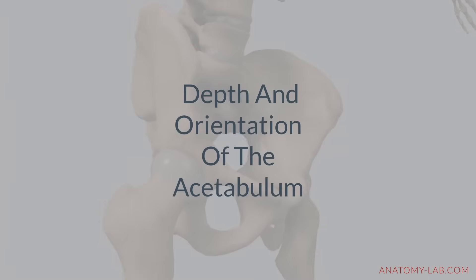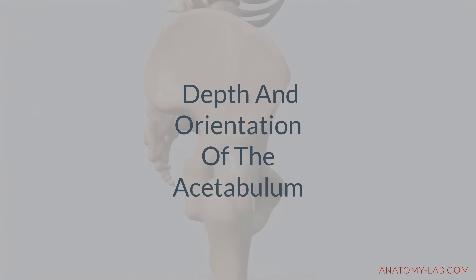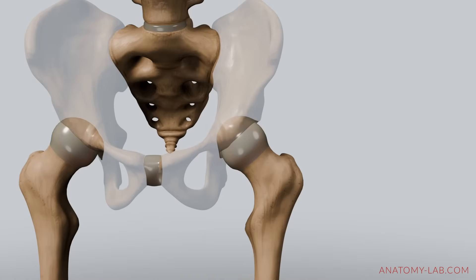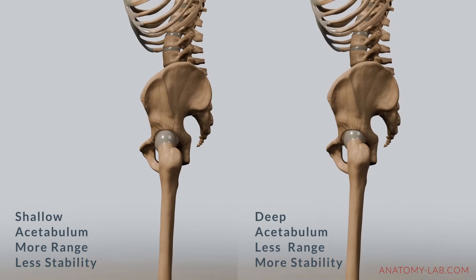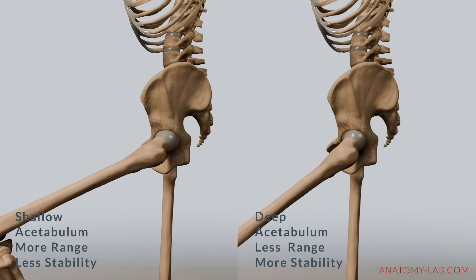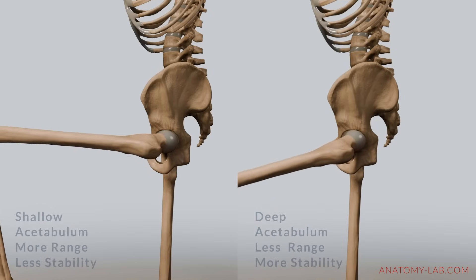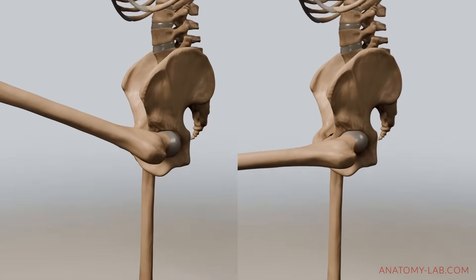So let's dive even deeper and add two more important factors for flexion: the depth and the orientation of the hip socket. Looking at the pelvis from the front, notice the difference between a shallower and a deeper acetabulum. A shallower acetabulum allows for a greater range of motion because the femoral head is less covered, providing more movement space. In contrast, a deeper acetabulum increases stability but limits range of motion as the femoral head contacts the acetabulum rim sooner, reducing joint space and flexibility.